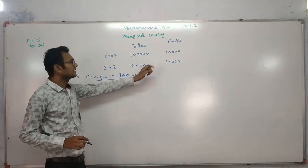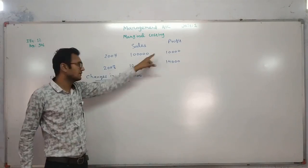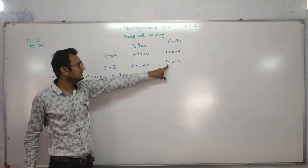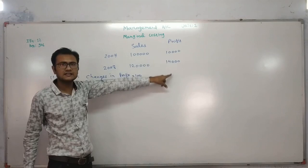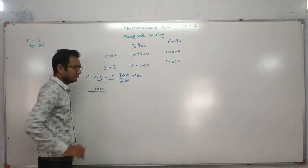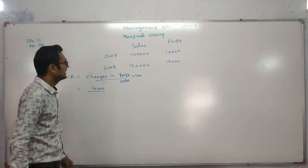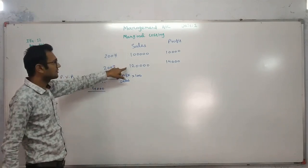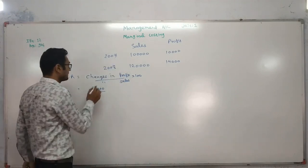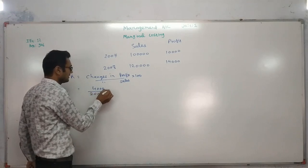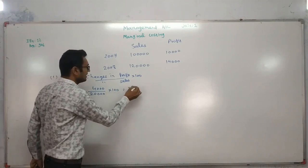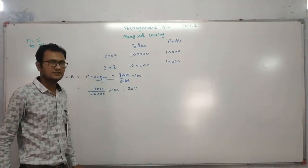The profit for year 2007 is 10,000 and for year 2008 is 14,000. So the change in profit is 14,000 minus 10,000 = 4,000. Sales changed from 12,000 to 20,000, so the change in sales is 8,000. Therefore PVR = 4,000 divided by 8,000 into 100 = 20%.